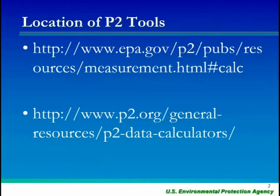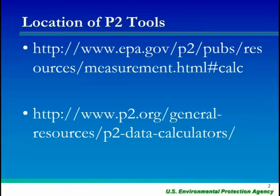For those that would like to download the tools — the pollution prevention calculators — these are the websites where they're located. The first one is the EPA, and the second is the National Pollution Prevention Roundtable. Kathy and I will be uploading our newest version of all the tools probably within the next 10 days or so, but in the meantime you're welcome to take a look at the current tools as well.